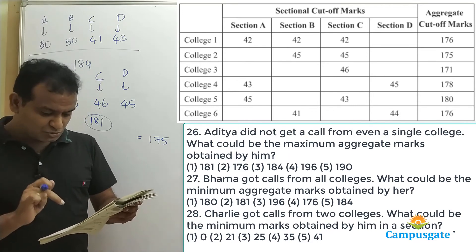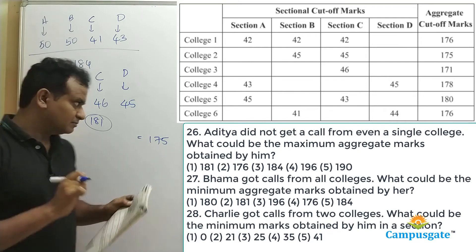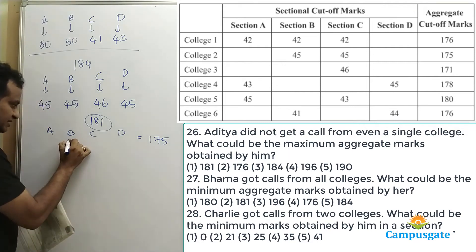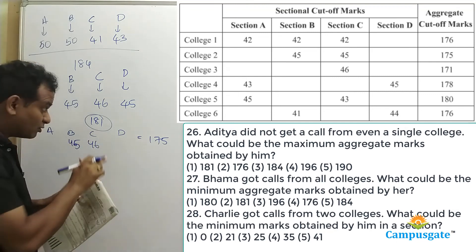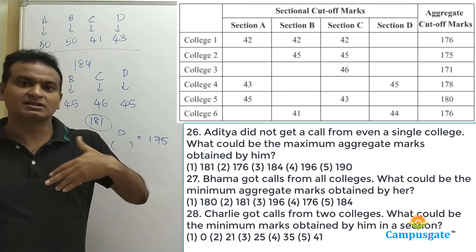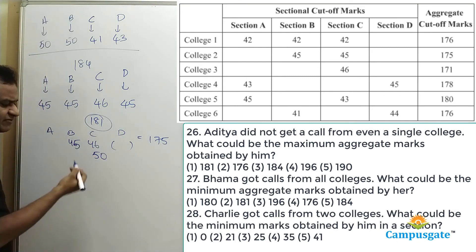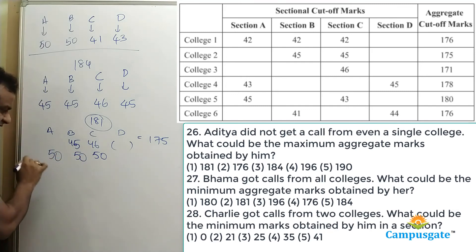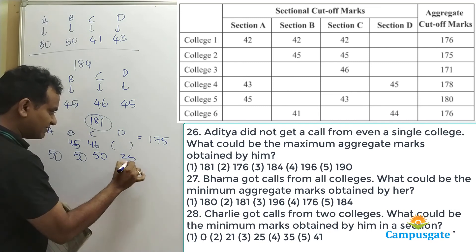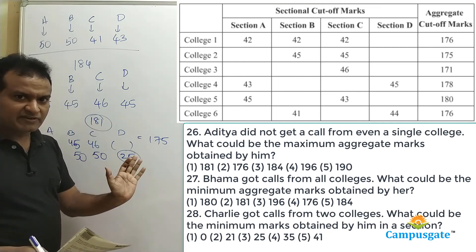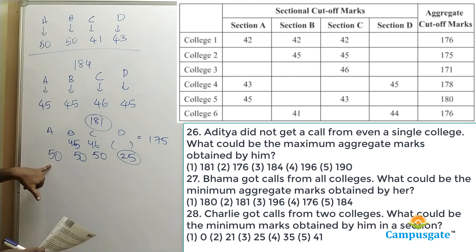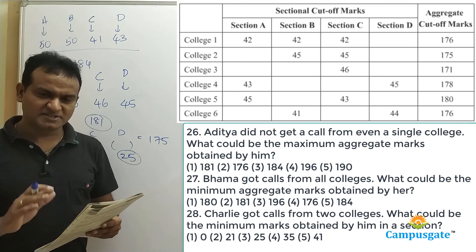To minimize the marks in one section, we must maximize the scores in the other sections. So let's assume he gets 50 in sections A, B, and C — that clearly clears the cutoffs for colleges two and three. If he gets only 25 in section D, his overall total is 50 + 50 + 50 + 25 = 175, which means he gets calls from only colleges two and three. Since we've maximized the other three sections, 25 is the minimum he can score in one section. Therefore, the answer for the third question is 25 — option 3.